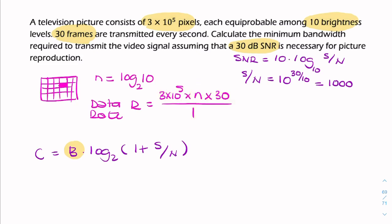Now we know that the data rate has to be less than the channel capacity. So the channel capacity, in other words, is greater than or equal to the data rate. And if you calculate the data rate, if you put that into the calculator, that gives you 44.2 times 10 to the power 6 bits per second.